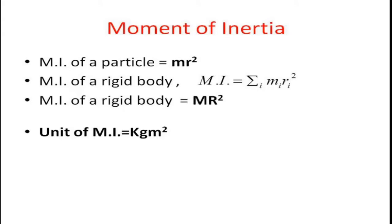Moment of inertia of a particle about an axis is equal to mR square, where m is the mass of the particle and r is the distance of the particle from the axis. Moment of inertia of a rigid body about an axis is equal to summation of mR square. The unit of moment of inertia is kg·m square.